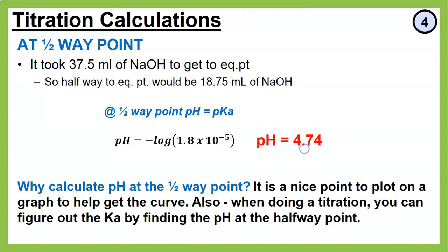Why do we care about the halfway point? It helps define the shape of our curve. In practice, sometimes the whole point of the titration is to find the Ka — you find the equivalence point, work back to the halfway point, and determine the Ka from the pH there.